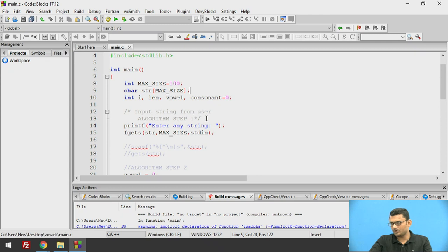This is step 1 of the algorithm. We start at line number 14. The user is prompted to enter string and we are using fgets method to take the input.